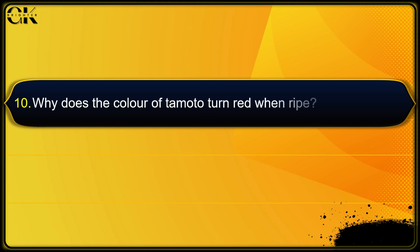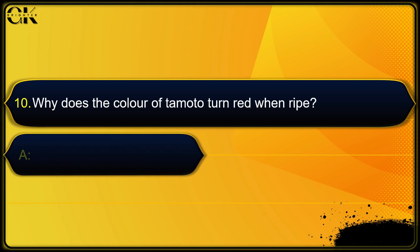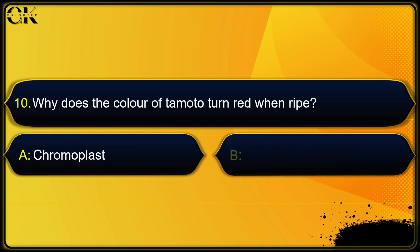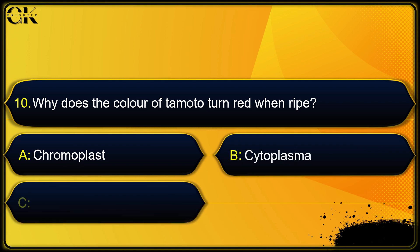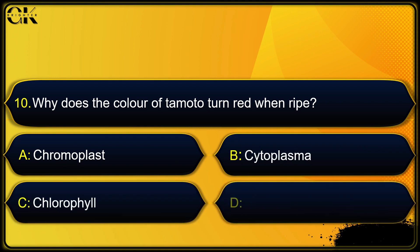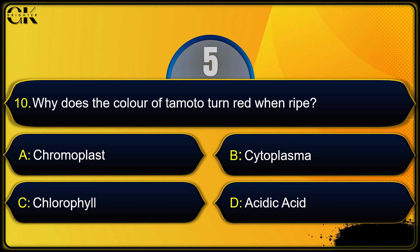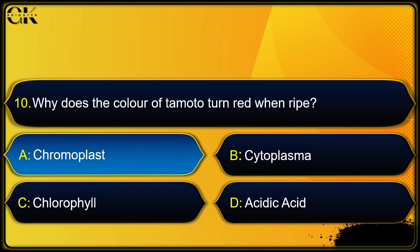Why does the color of a tomato turn red when ripe? Options: chromoplast, cytoplasm, chlorophyll, or acidic acid. The answer is chromoplast.